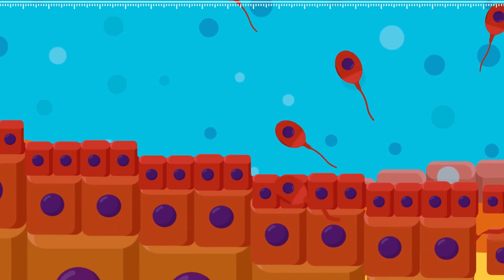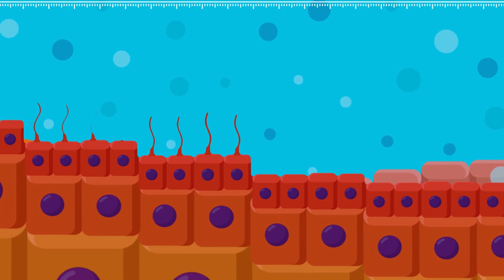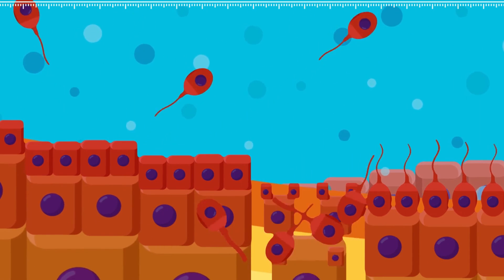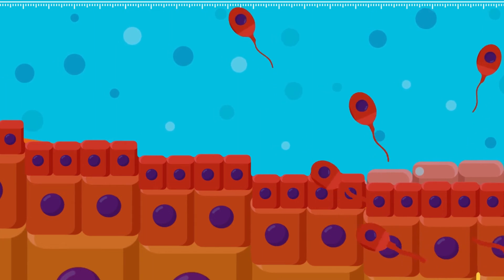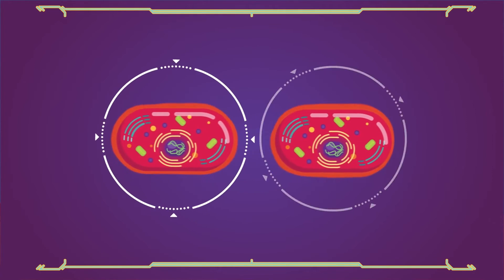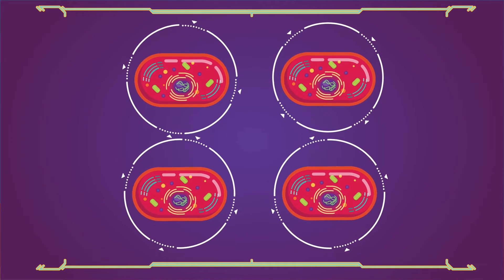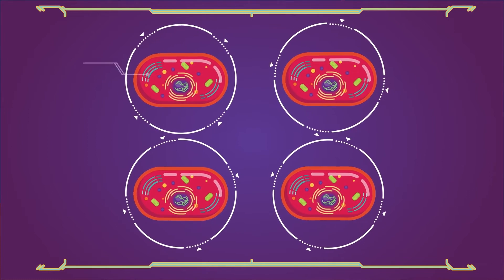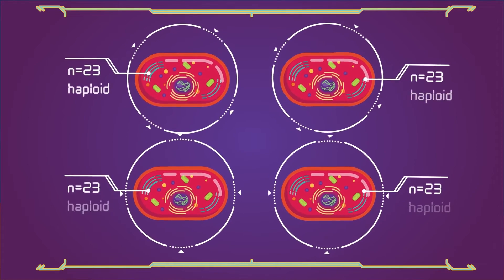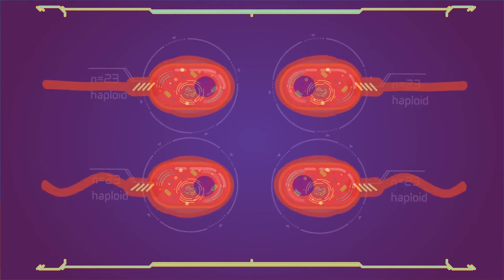Meiosis is a process where a single cell divides twice to produce four cells containing half the original amount of genetic information. These cells are our sex cells: sperm in males, eggs in females. During meiosis, one cell divides twice to form four daughter cells. These four daughter cells only have half the number of chromosomes than the parent cell - they are haploid.